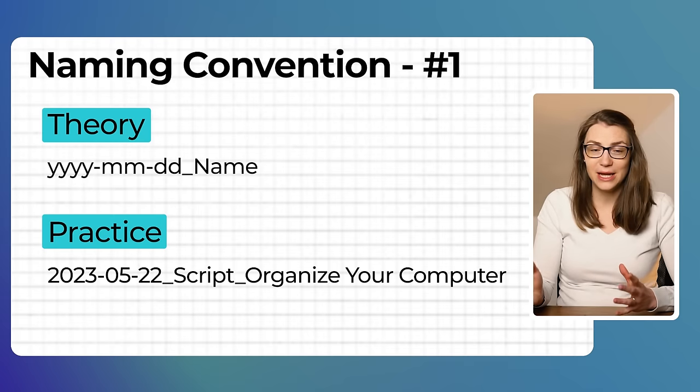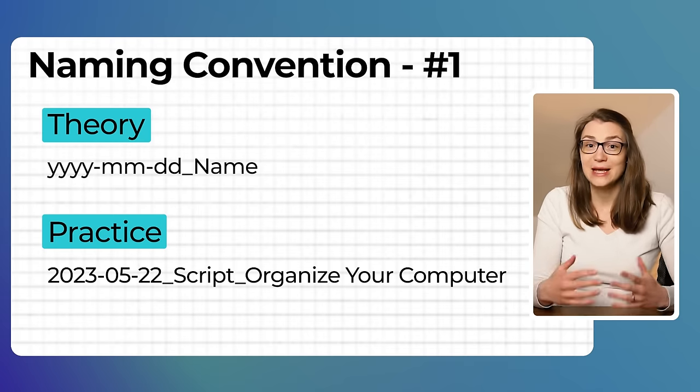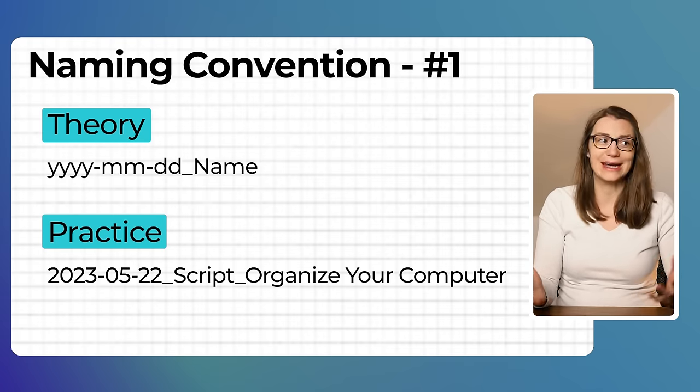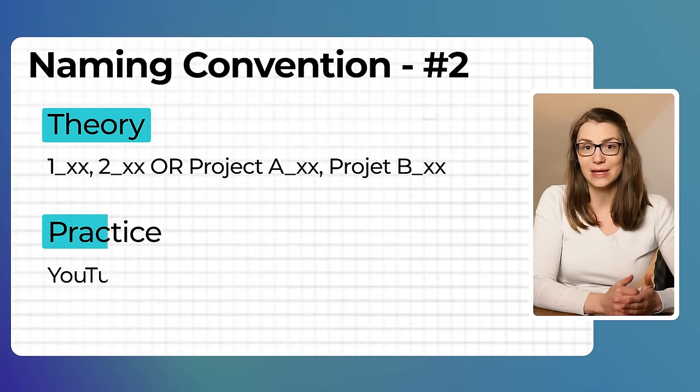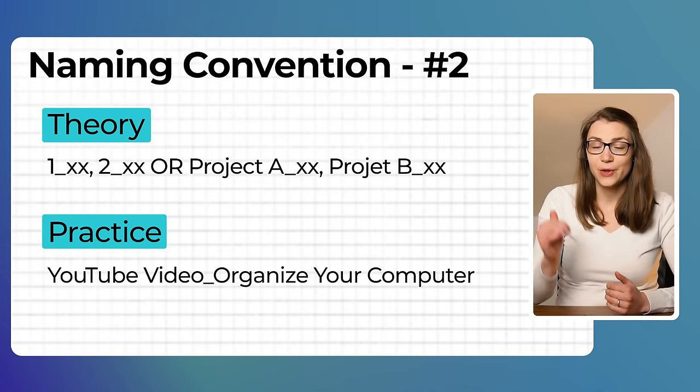I always like to start with the date followed by the document name — for example, 2023 05 22 script organize your computer. This structure lets you easily sort documents by date. Alternatively, you could number the documents or start each name with the client or project followed by the name, such as YouTube video organize your computer. Having named your files properly and stored them at their target location, your desktop will be as clean as it has never been before.